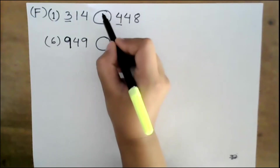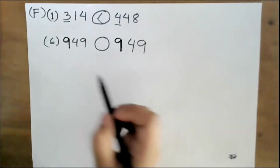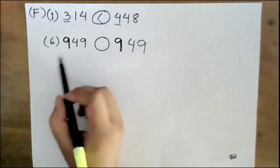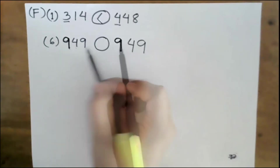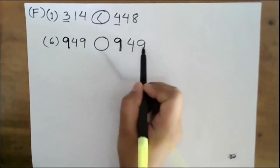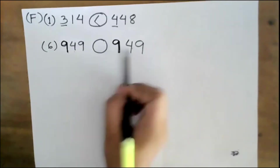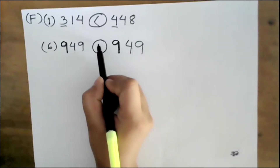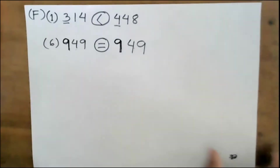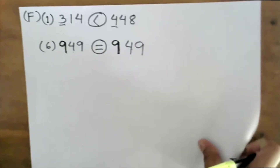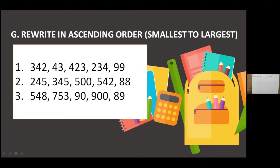So the sign will be less than. And number six: 949 and 949 — these two are equal, so the sign is the equal to sign. And question G: rewrite in ascending order. Question number one: 342, 43, 423, 234, and 99.